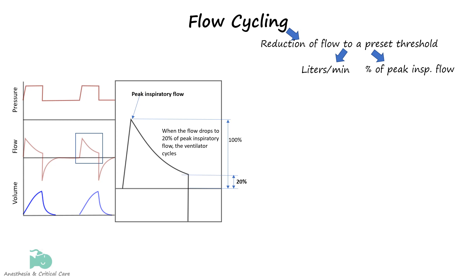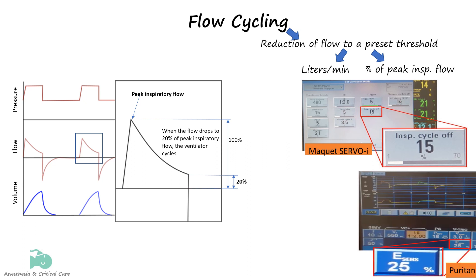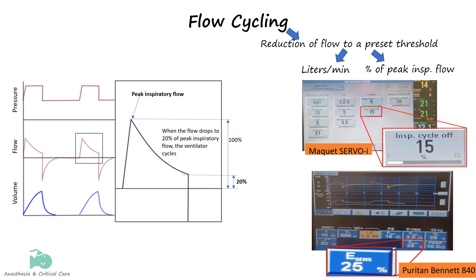In some models it is possible to set this value as an absolute number, such as 5 liters per minute. The MAQUET Servo represents the flow-cycling variable as a percentage of peak inspiratory flow and offers a range of settings from 1% to 70%. In contrast, the Puritan Bennett 840 provides a maximum setting of only 45%.